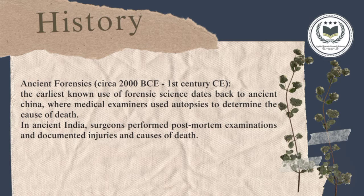During the medieval Europe period, forensic was relatively rudimentary, with trial by ordeal and other superstitious methods used to determine guilt or innocence. As a note, the first recorded use of medical knowledge in a criminal investigation took place in the 13th century, when a Chinese coroner named Song Ci wrote 'The Washing Away of Wrongs,' which outlined methods for conducting autopsies and investigating deaths.